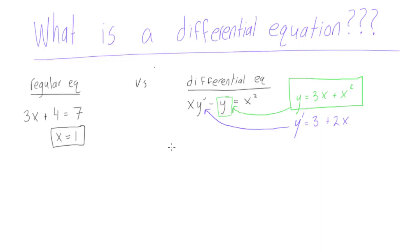And now we can just write out this equation. So we have x times y prime, which is 3 plus 2x, minus y, which is 3x plus x squared. Okay. This is equal to x squared.